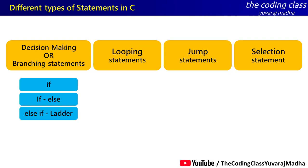Next, there are looping statements. A loop means the program code is executed repeatedly. It is not just executed once — the same code block runs again and again until a condition is satisfied. This is how looping statements work.